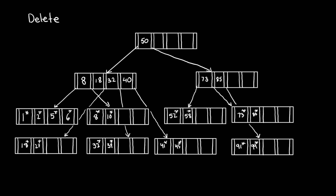Now let's delete 8 from that same tree. To begin the deletion, we traverse down the tree searching for the data entry to delete. Looking at the root, 8 is less than 50 so we traverse down the pointer before 50. At the next level, we find an entry with value 8 but it is not a data entry. By convention, this means we take the pointer to the right to find the data entry. Now we've reached the data entry 8 and we delete it from the tree.